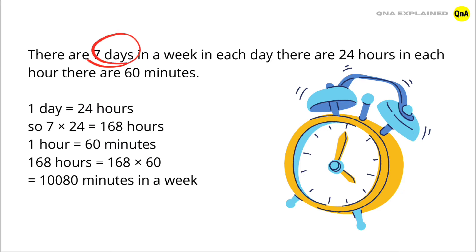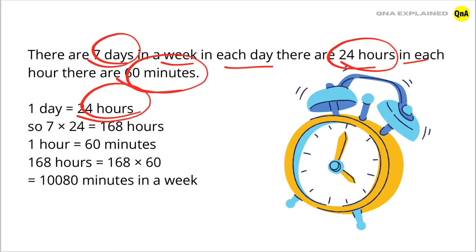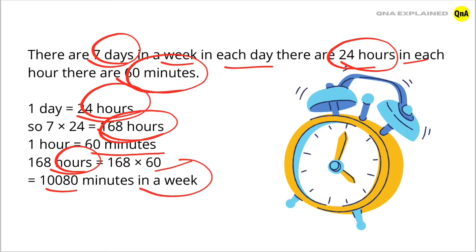There are 7 days in a week. In each day, there are 24 hours. In each hour, there are 60 minutes. 1 day equals 24 hours, so 7 into 24 equals 168 hours. 1 hour equals 60 minutes, so 168 into 60 equals 10,080 minutes in a week.